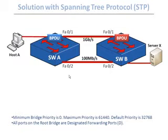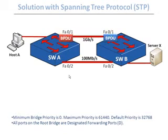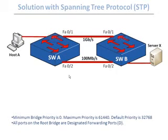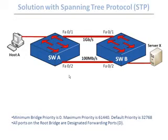Spanning tree maintains and creates a loop-free topology by exchanging small packets called BPDUs — bridge protocol data units. The spanning tree protocol creates a loop-free topology by selecting a single switch among all switches in the topology to act as a reference point.